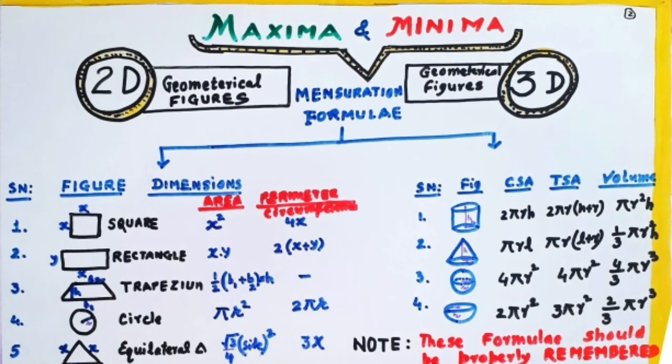These formulas must be properly remembered, because they are used in the questions. And these are very important formulae, because without this, all the questions will not be attempted nicely if we apply the formula wrongly. So this is what you are supposed to remember, because although these formulas are from the junior classes, they are widely used in these types of questions, of maxima and minima.